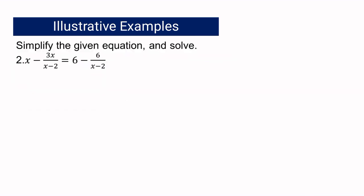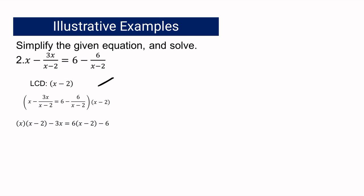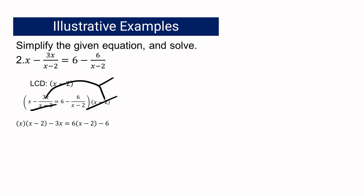For example number 2, we have X minus 3X over (X minus 2) equals 6 minus 6 over (X minus 2). The first thing to do is identify the LCD, which is the quantity (X minus 2). We multiply each term by (X minus 2). For the first term, X times (X minus 2) remains. For the second term, (X minus 2) cancels out, leaving minus 3X. For the right side, 6 multiplied by (X minus 2), and the last term's denominator cancels, leaving negative 6.